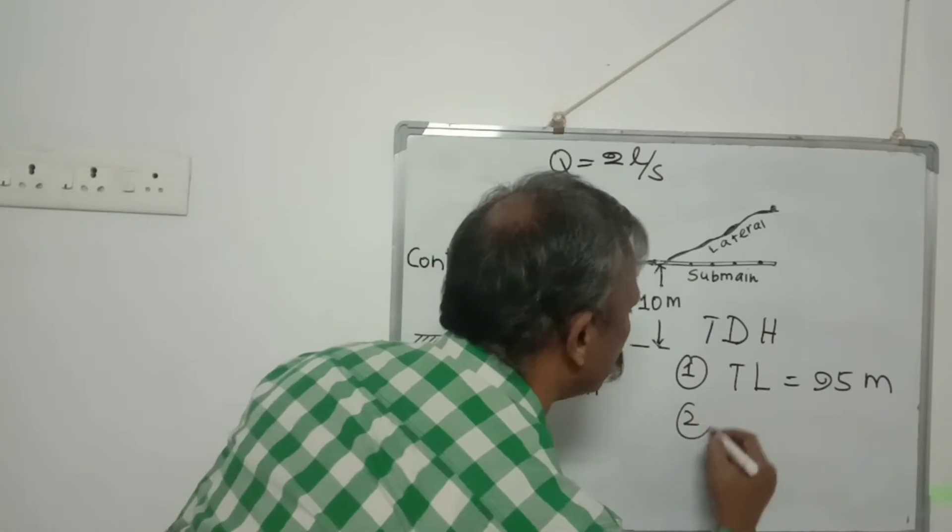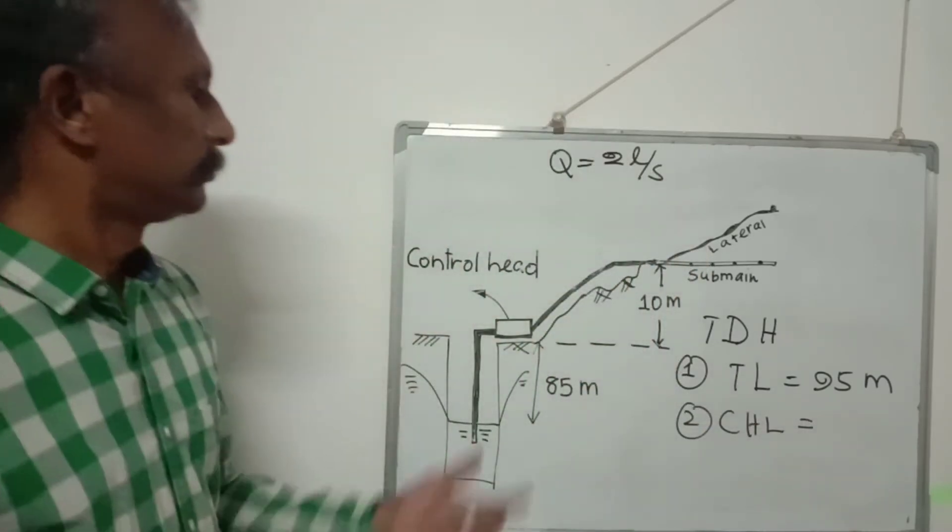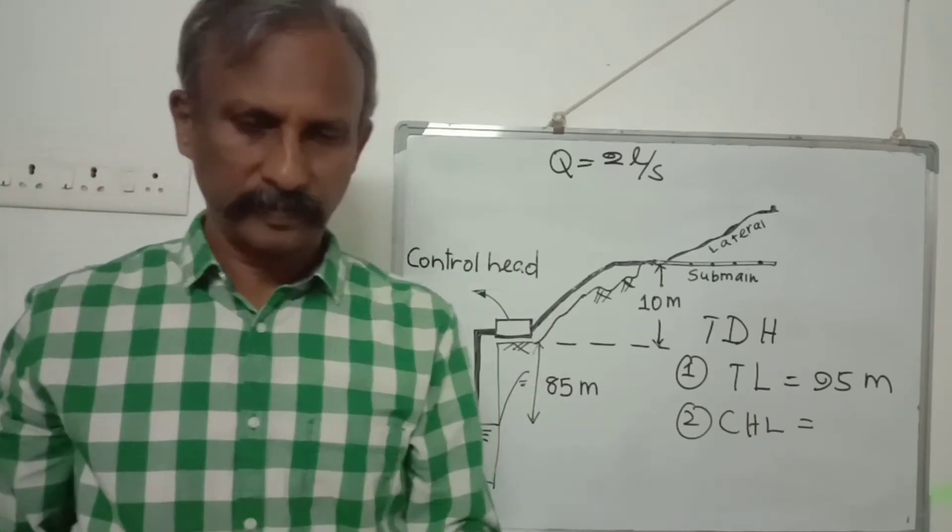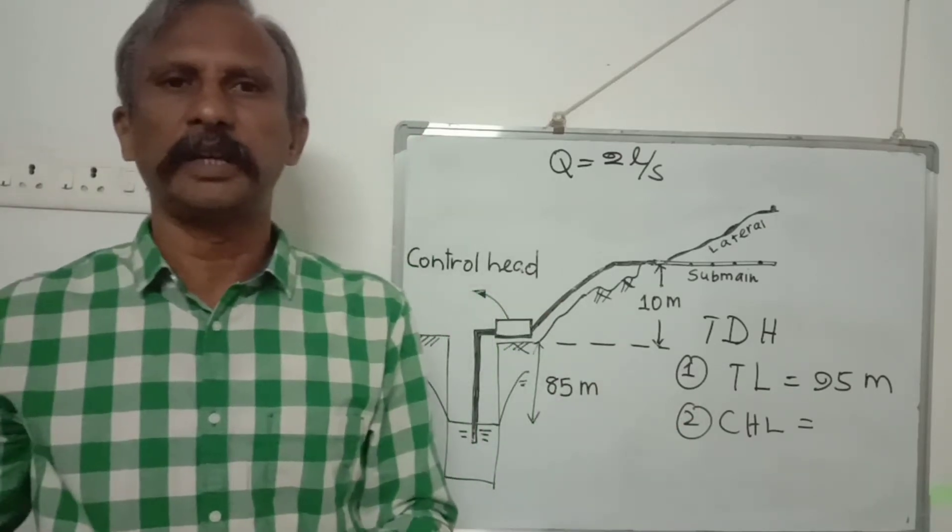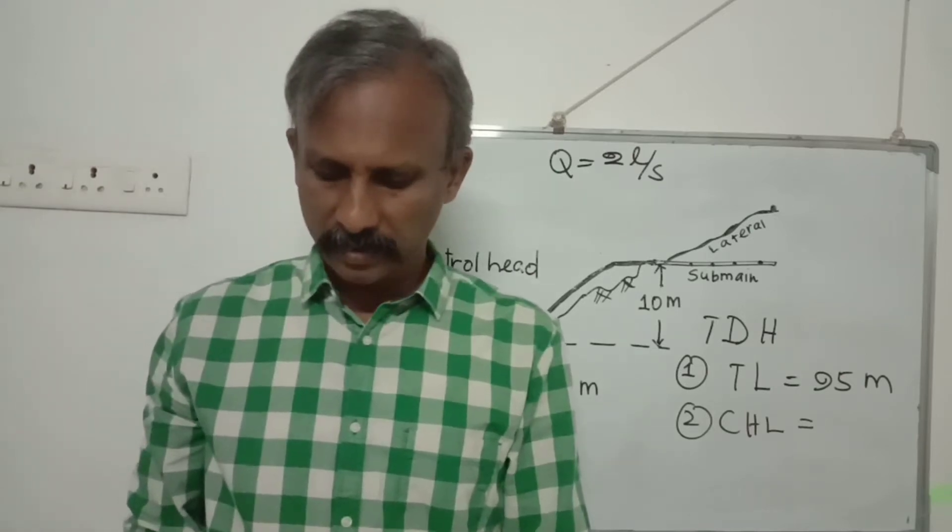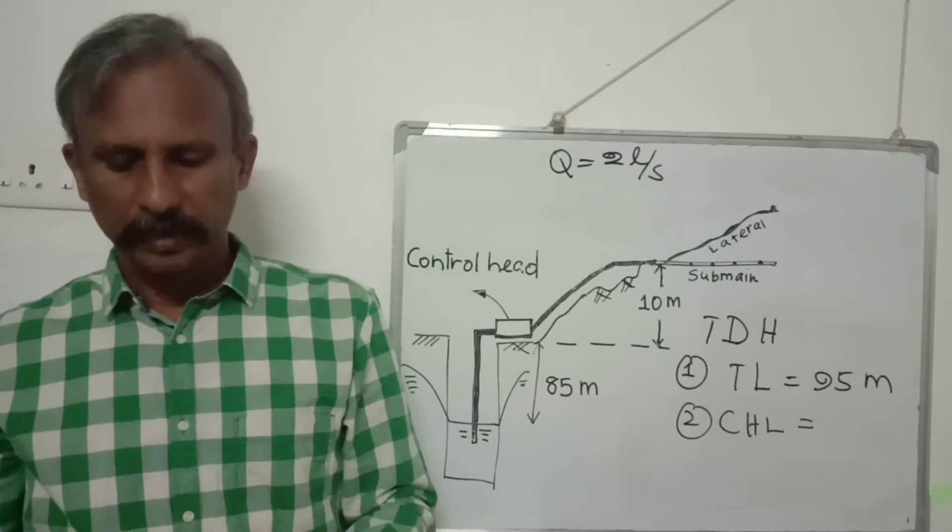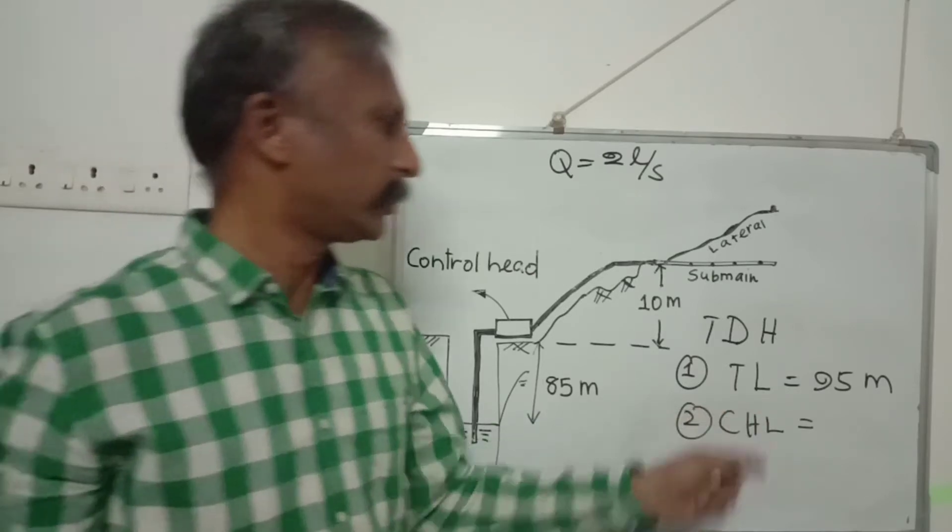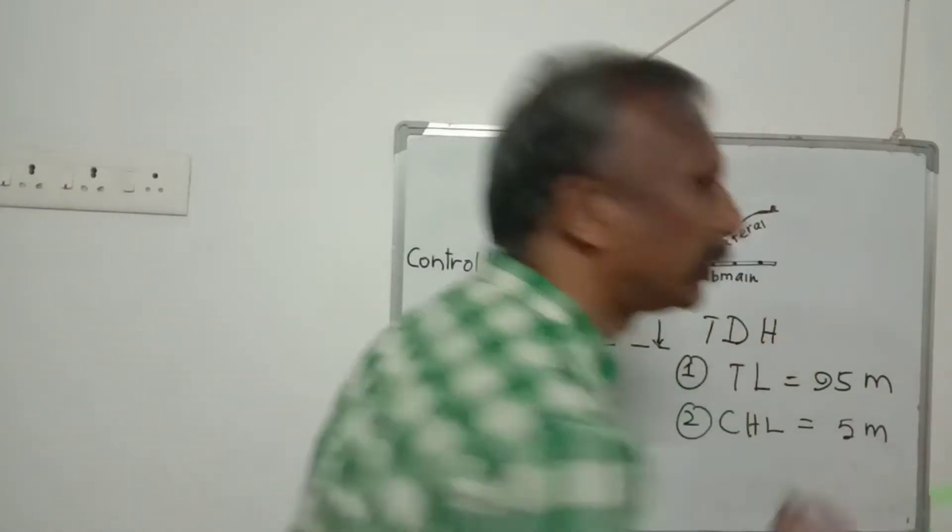Second is control head losses. In the control head we will have fertigation devices and filters. We may have any number of filters. Normally we will have hydrocyclone or disc filter or sand filter or a combination of these things. So if we take just five meters at the maximum for the control head losses, it is enough.